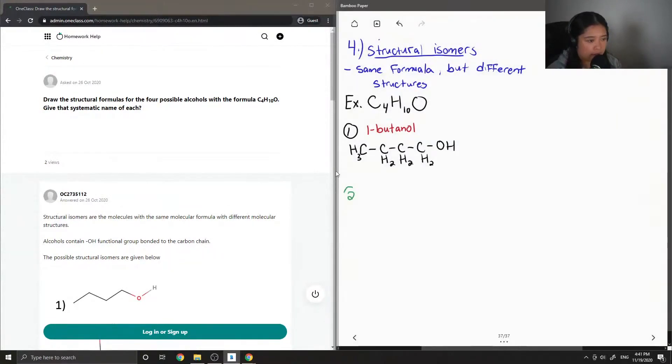I'll draw out the second isomer. Again, let's write out four carbons in a line. Let's write the easier isomers first. This time I'm going to put the alcohol group on a carbon in the middle, and now I'll fill in my hydrogens.